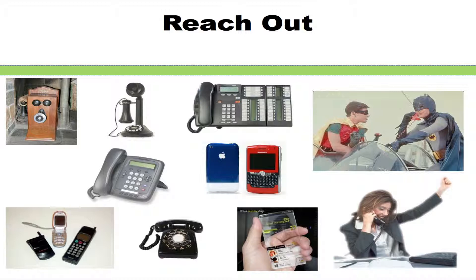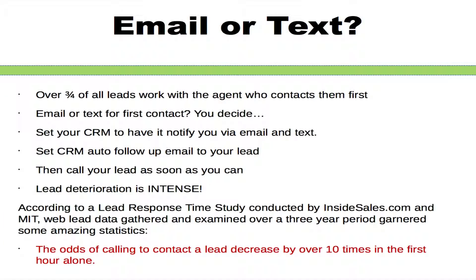Since over three quarters of all leads work with the agent who contacts them first, speed is a factor. Instead of just emailing them, you may also want to text them because a text is immediate, a little more personal, and makes it look like you're right on top of it. The best plan of attack is to do the text, the email, and the phone call. Set your CRM to notify your new lead via email and text, and set your CRM auto follow-up to automatically follow up by email, then call your lead as soon as you can.